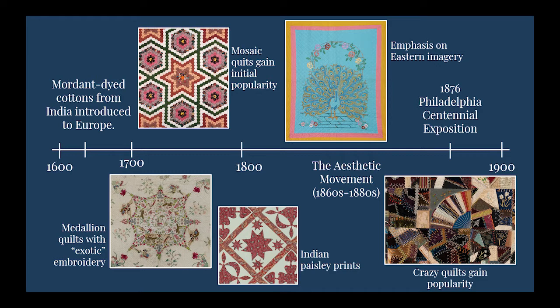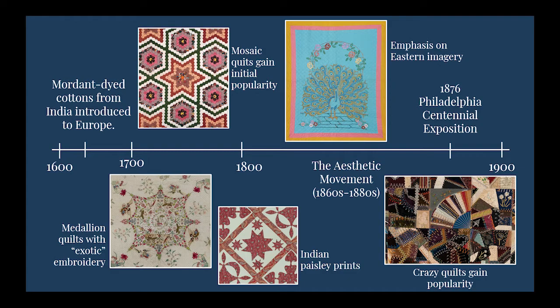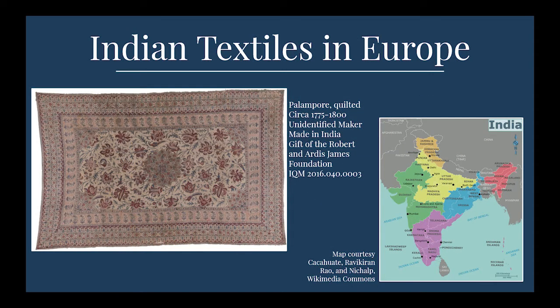We'll look primarily at quilts made between 1700 and 1900, with emphasis on old-world medallion quilts and crazy quilts. Indian textiles, especially their printed cottons, were introduced to Europe early in the 17th century. Europe had not yet developed the technology needed to use mordants, which are necessary for helping dyes adhere to cotton fibers, and so many of the colors of Indian textiles were new to Europeans.